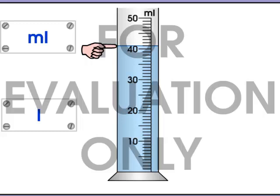One notch above 40 milliliters will be 41 milliliters. Now we're at two notches above 40, which is 42 milliliters.